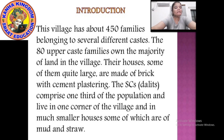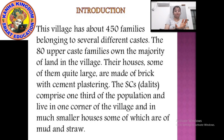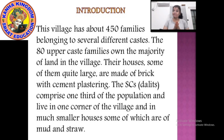But before that you should also know that Palampur is well connected with the neighboring villages. The neighboring village is Raiganj, a big village only three kilometers far from Palampur. Now Palampur has 450 families and these 450 families are of several different castes. From which 80 upper caste families are there. Upper caste family means they can be counted as rich families, and the majority of them have their own land.